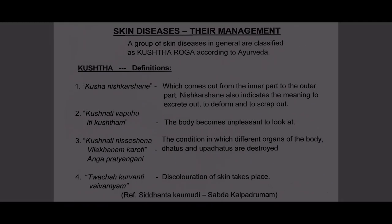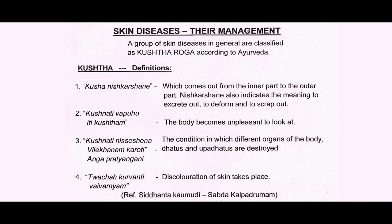A group of skin diseases is generally classified as Kusta Roga according to Ayurveda. The definition of Kusta goes like this: Kushaha Nishkarashane, which comes out from the inner part of the body to the outer part. Nishkarashane also indicates the meaning to excrete out, to deform, and to scrap out.